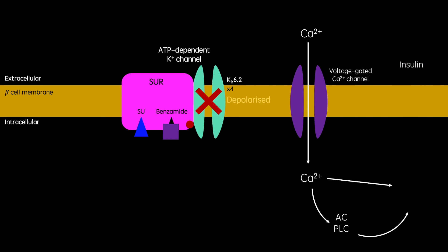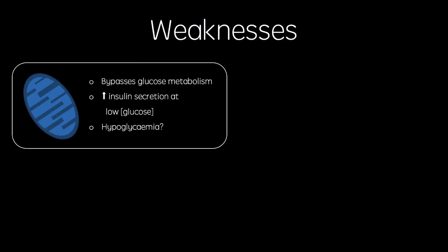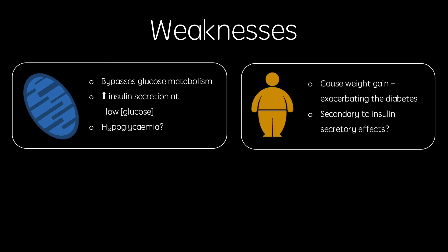As you can see, sulfonylureas and glinides bypass the glucose metabolism section of normal glucose-dependent insulin secretion, meaning this insulin secretion is completely independent from glucose concentration. This is quite a dangerous property of these drugs, because if a patient takes them while having a low blood glucose concentration, such as when they first wake up, hypoglycemia may be induced. Drugs which mediate glucose-dependent insulin secretion are much safer, and I'll put the links for my videos on GLP-1 analogues and DPP-4 inhibitors below.